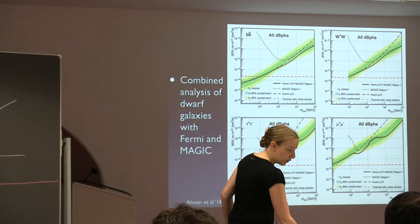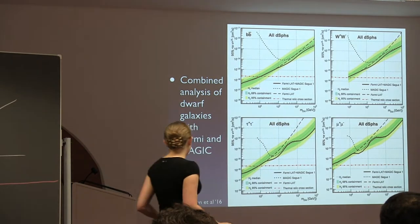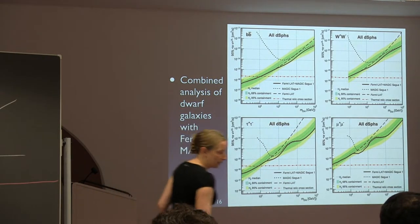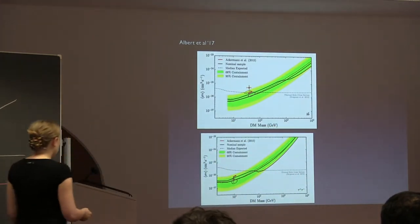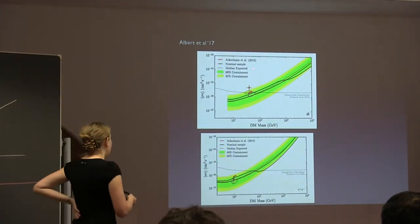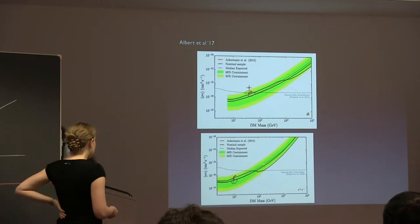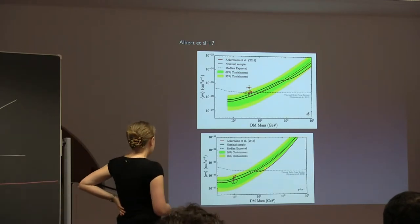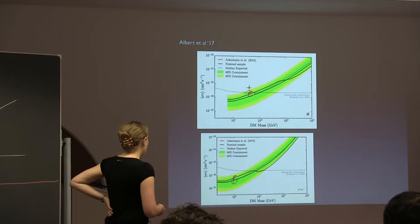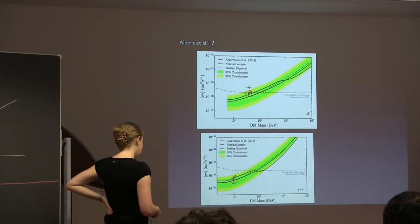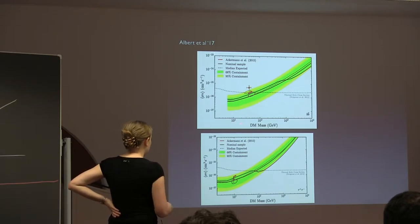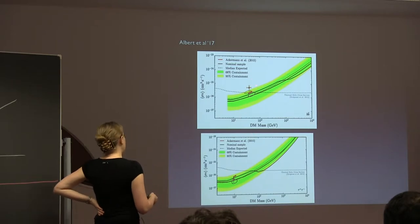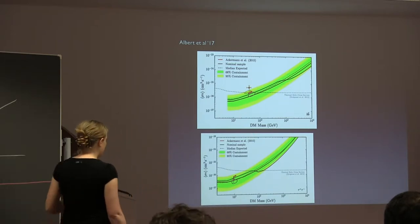This older analysis is from 2016. The most recent dwarf analysis with 45 sources shows results for the b-bbar and tau+ tau- channels. The red line is the old analysis, black is the new analysis — they're qualitatively similar, and again you rule out roughly thermal relic dark matter below the 80 to 100 GeV scale.